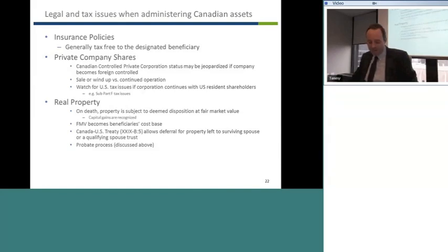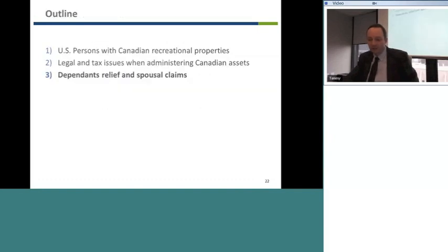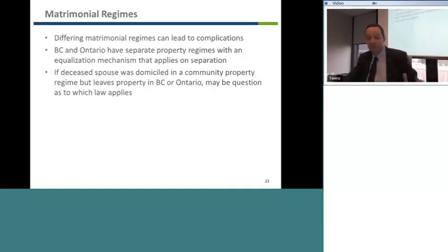Real property on death is going to be subject to a deemed disposition regardless of whether the owner is resident in Canada or not. The fair market value becomes the beneficiary's cost base, and then there are treaty provisions if it's going to a surviving spouse or a qualifying spouse trust. We've already talked about probate. So the next area we're going to move to is dependence relief and spousal claims.